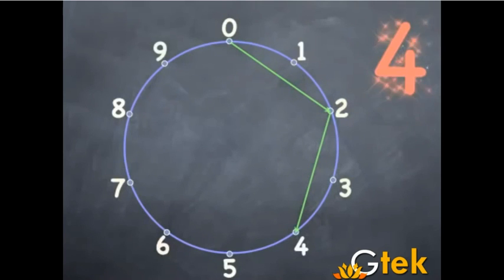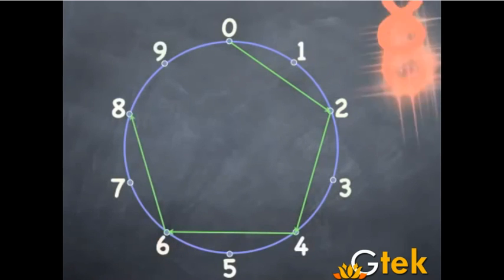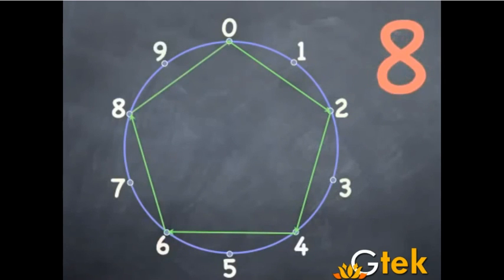0 to 2, 2 to 4, 4 to 6, 6 to 8, and 8 to 0. A polygon shape has come. So 8 to 0 is 10.